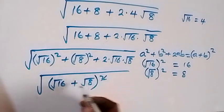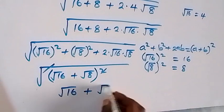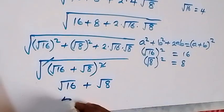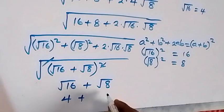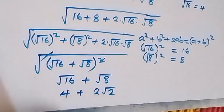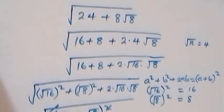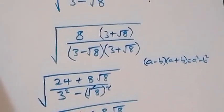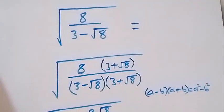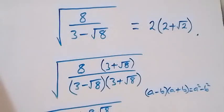The square inside cancels with the outer square root, leaving us with root 16 plus root 8. Root 16 is 4 and root 8 is 2 root 2. We can factor out 2, giving 2 times bracket 2 plus root 2. Therefore the simplified form is 2 times open bracket 2 plus root 2 close bracket.